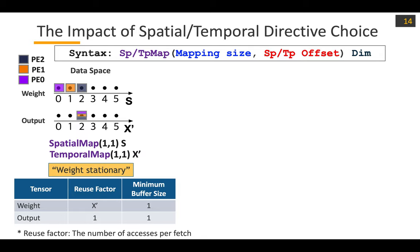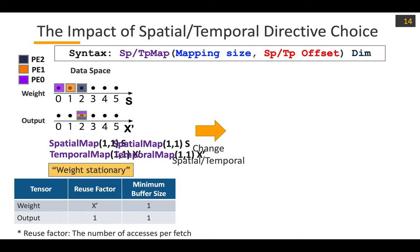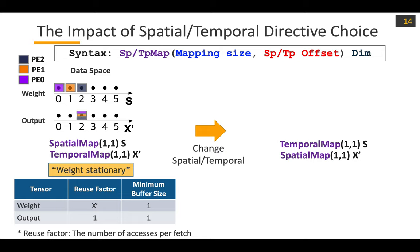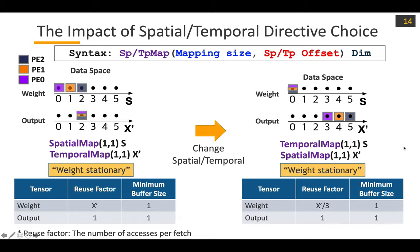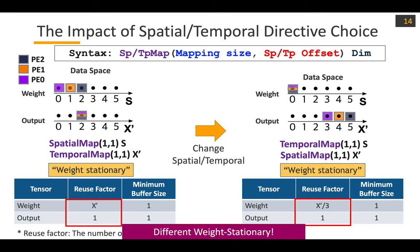What happens if we flip the spatial and temporal directives? I changed spatial and temporal from the base representation. The result mapping's initial mapping looks different. The output still moves faster, so it is still a weight stationary mapping. But looking at the reuse factor, it has changed — the amount of reuse is different. So this is a different weight stationary mapping with a different reuse factor.